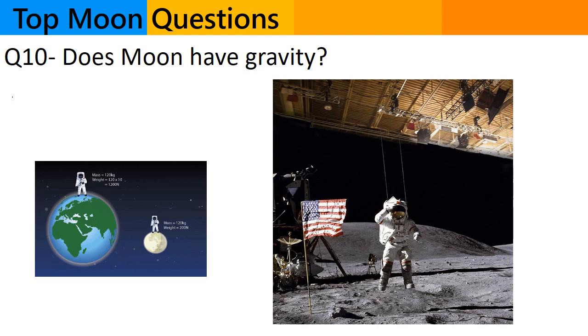The force of gravity on the moon is about one sixth the strength of the gravity on earth. This means that objects on the moon weigh about one sixth of what they would weigh on earth. For example, if you weigh 60 kg on earth, you would weigh approximately 10 kg on the moon.